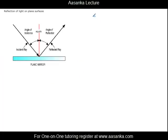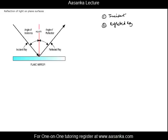Now we will discuss some general terms used in reflection phenomena. The first is the incident ray — the ray that falls from the source to the object, which is this ray here. This is the incident ray. The second term is the reflected ray — the one which goes after reflection, which is this one here. Then we have the point of incidence — this is the point on the mirror surface where the incident ray strikes or the reflected ray bounces off, which is this point here.